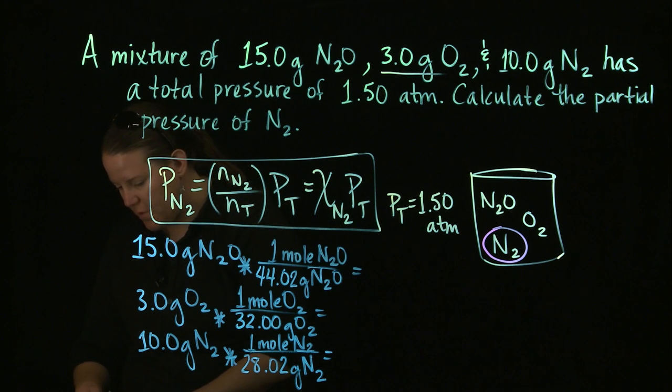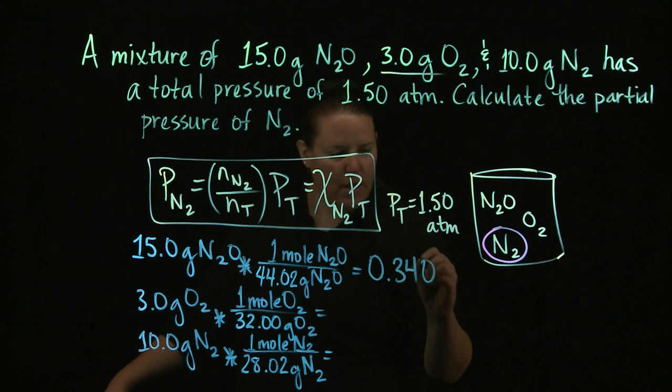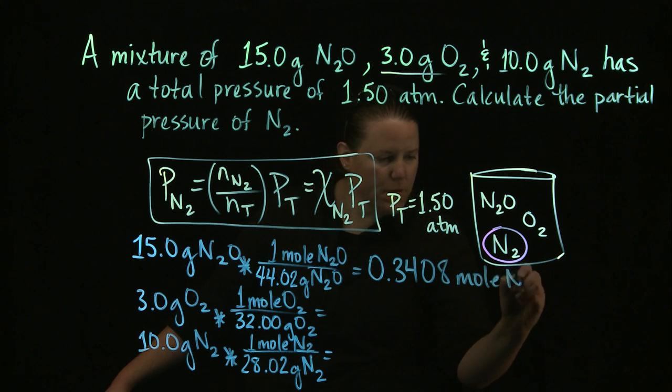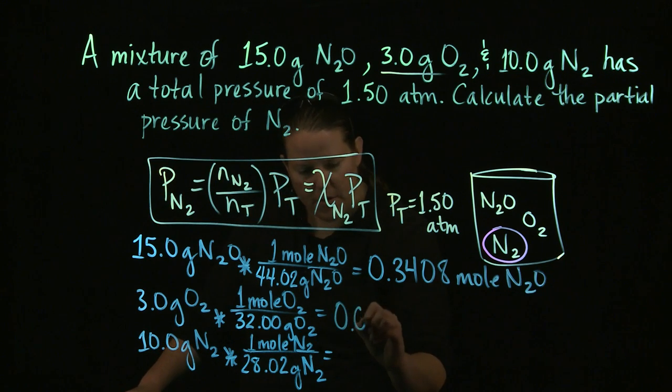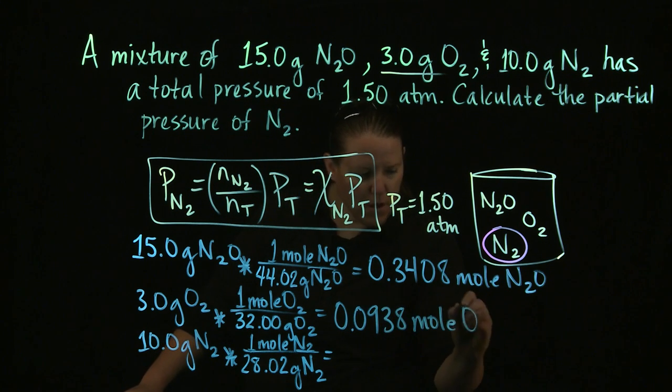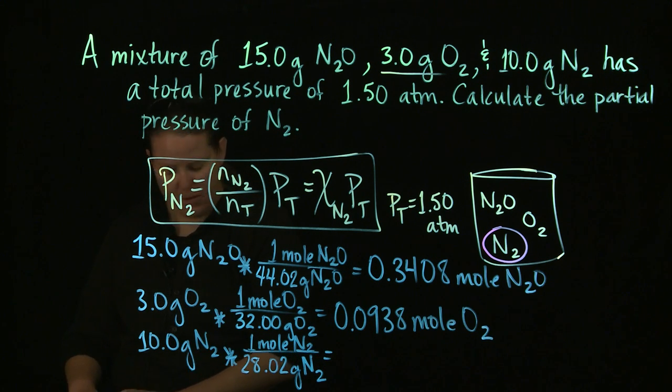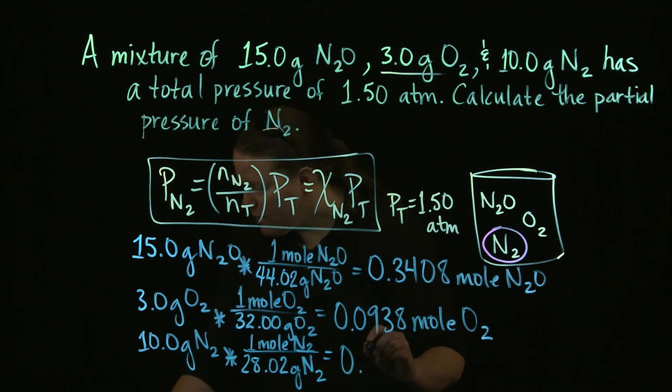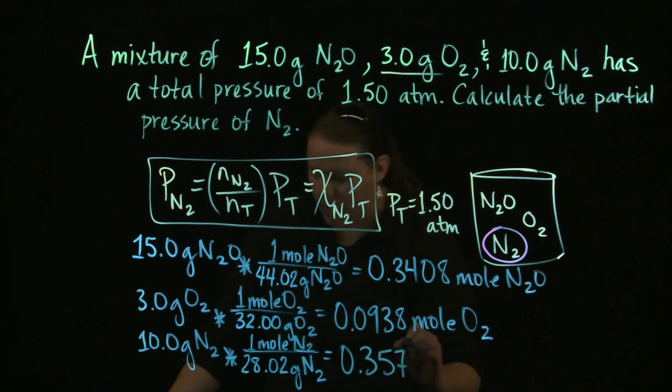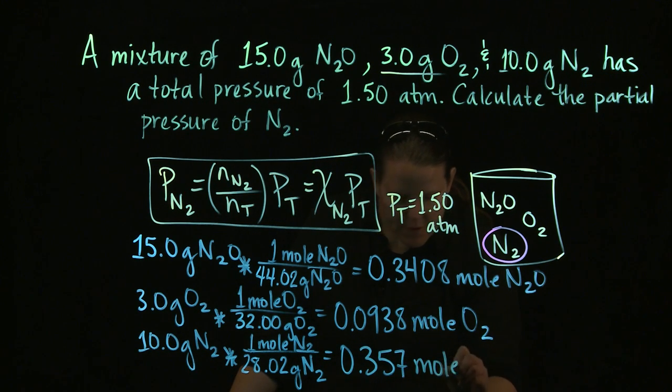15 divided by 44.02, 0.3408 moles of N2O. In this mixture, 3 divided by 32 is 0.0938 moles of O2, a relatively far smaller number. That makes sense because we had less grams of that one. And 10 divided by 28.02, I get 0.357, or 0.356887, so on and so forth. Moles of N2.